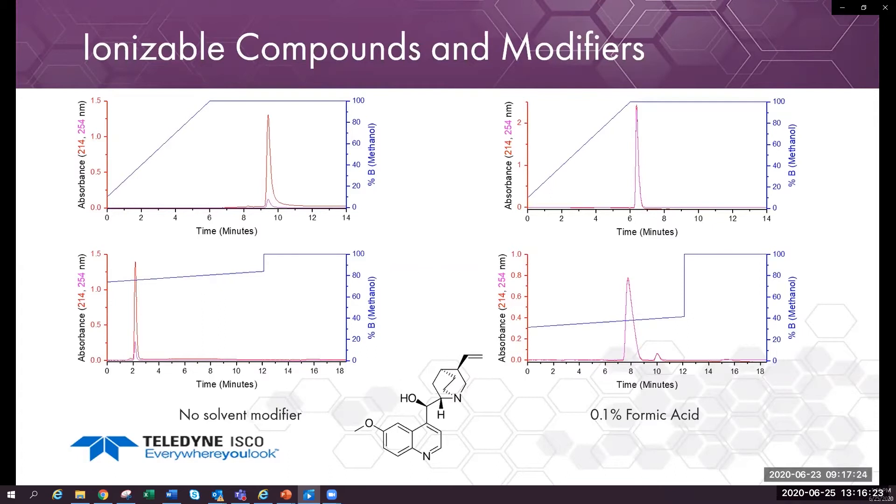The quinine eluted just a little late with 0.1% formic acid, but it is still a good useful run.